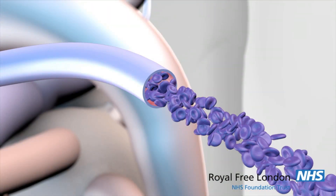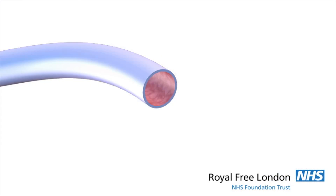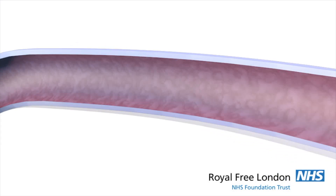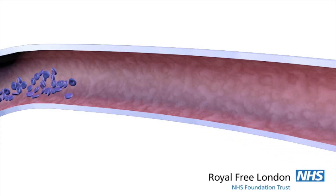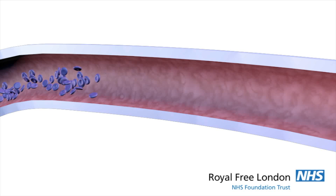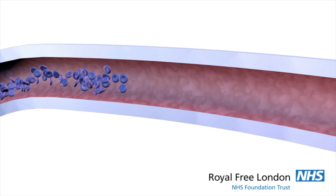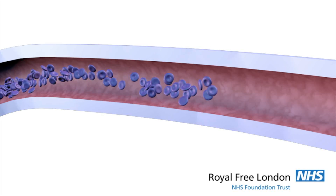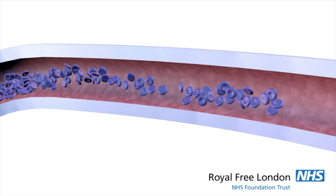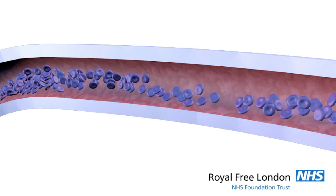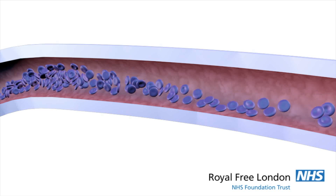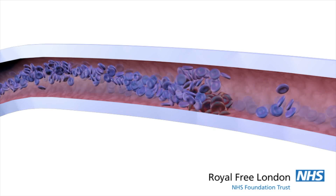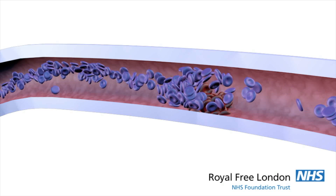However if you have pulmonary hypertension the walls of your pulmonary arteries are thick and stiff making it difficult for them to expand to allow more blood through. In some cases pulmonary arteries may be blocked by blood clots which can also hinder blood flow.